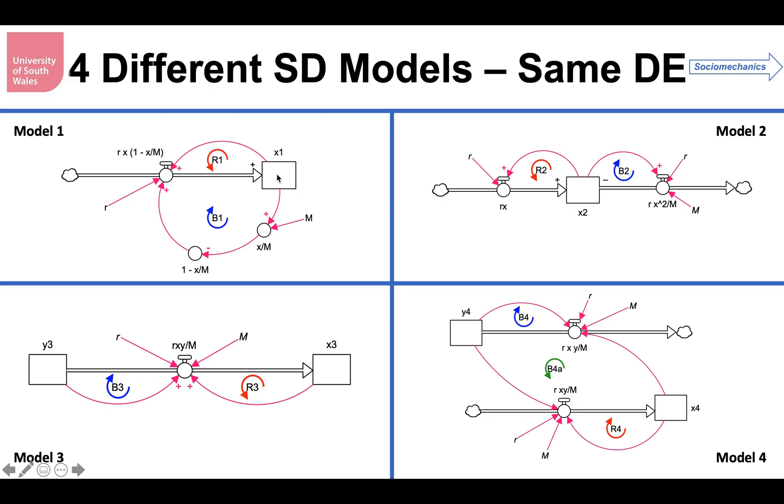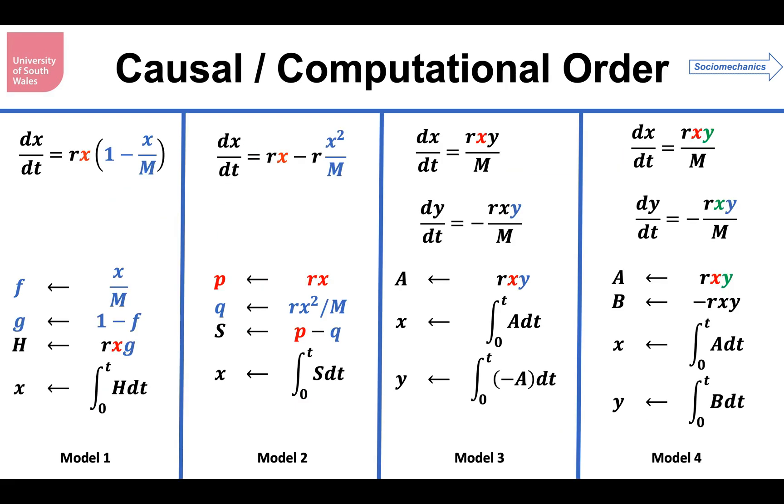Well, it needs to evaluate the stocks. It evaluates the flow. It works out it takes that from this, takes that from here. So there is a sequence reversing that, reversing causality back in. x determines x over m. x over m determines 1 minus x over m. 1 minus x over m determines the flow along with this loop. If you follow that order in each of these other three models, you get a different order of computation. We're going to express that in this way.